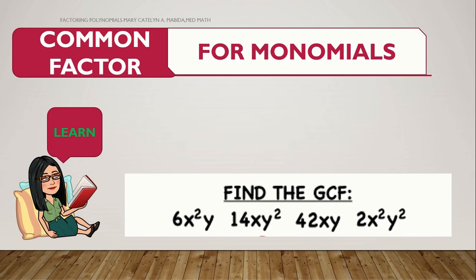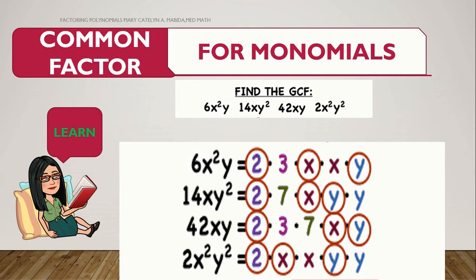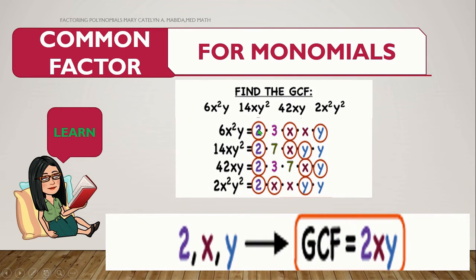Take a look at these four monomials right here. Here, we can see in this method that all prime factors are written like so. For 6x squared y, 14xy squared, 42xy, 2x squared y squared. And notice that whatever is common among the four are being encircled. And if they don't have common among the four, like 3, there's no 3 here. And here, like 7, there's no 7 here. And here, like x here, it does not have another x here. And it does not have another x here. And also, y, it does not have another y here. And it does not have another y here. So that is why they are not being encircled.